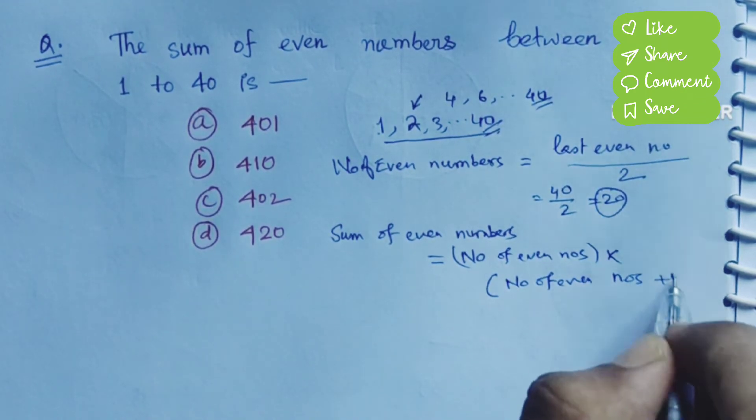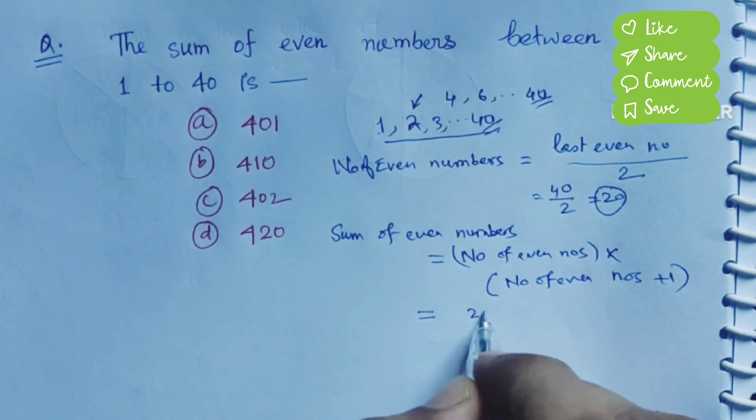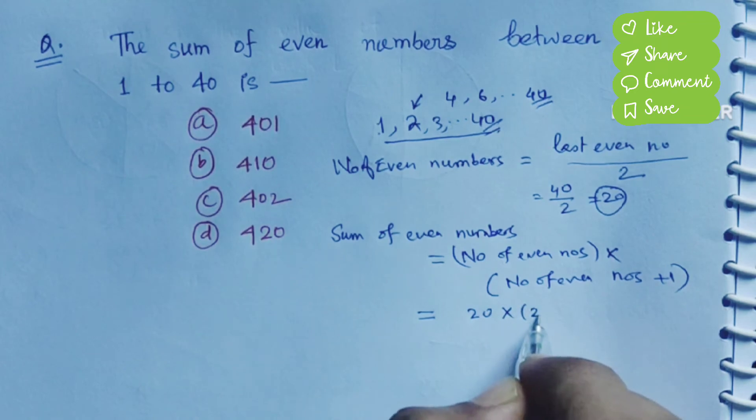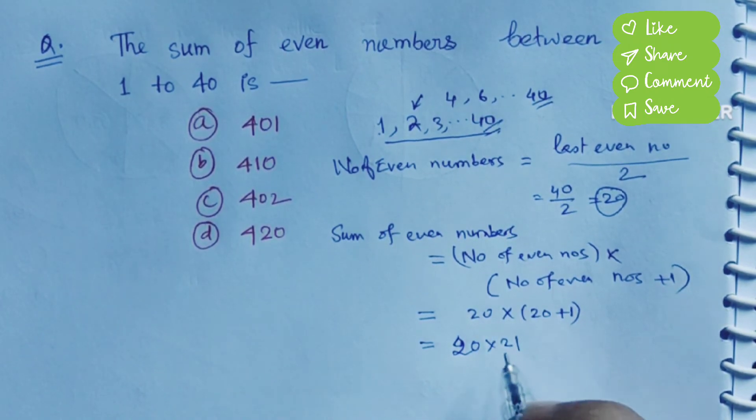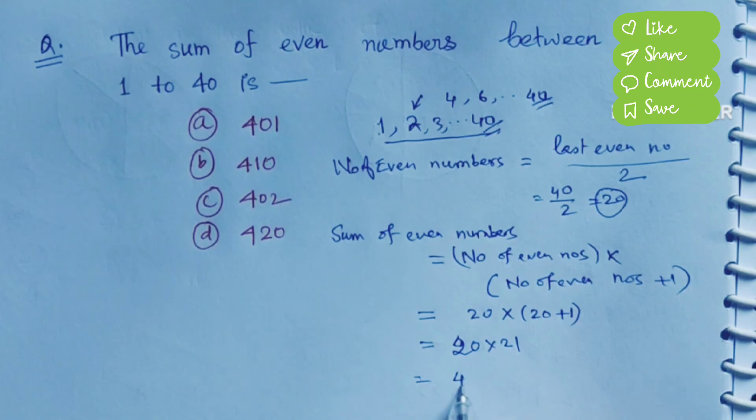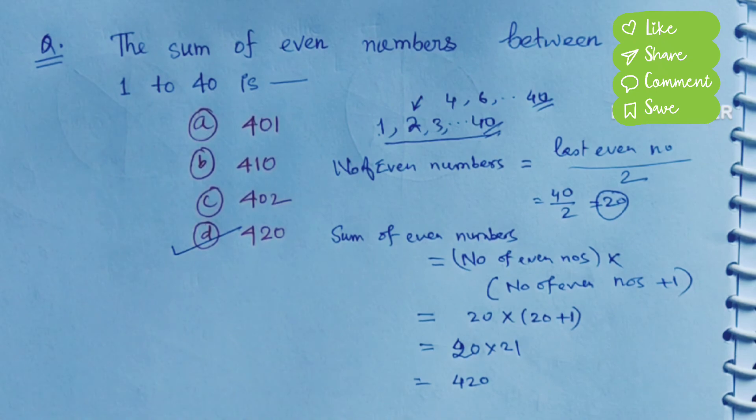So here the number of even numbers is equal to 20, so 20 into 20 plus 1. So 20 into 21, which equals 420. So option D is 420.